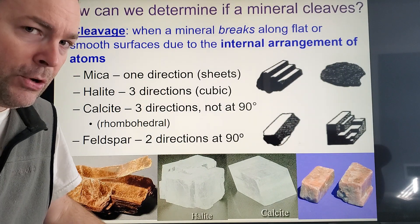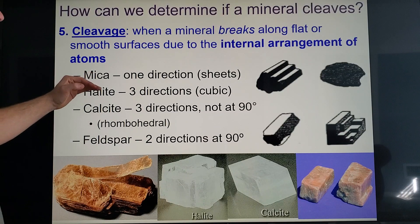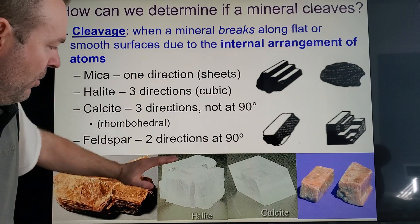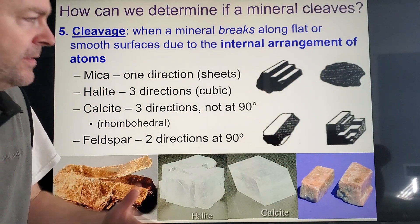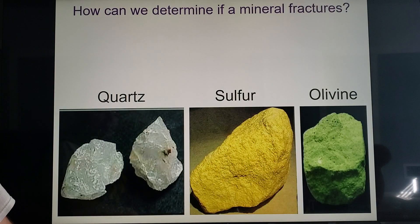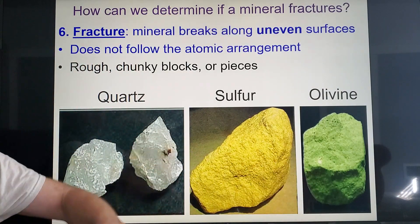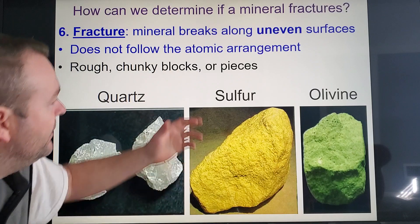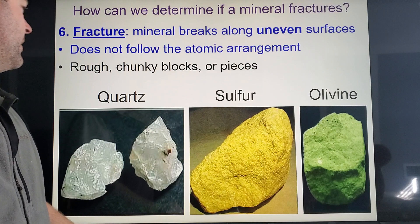Cleavage is due to the internal arrangement of atoms. Different minerals cleave in different directions, but they all have that flat surface once broken. The opposite of cleavage is fracture — minerals that break unevenly, like glass, not following an atomic arrangement. That's more disorganized.